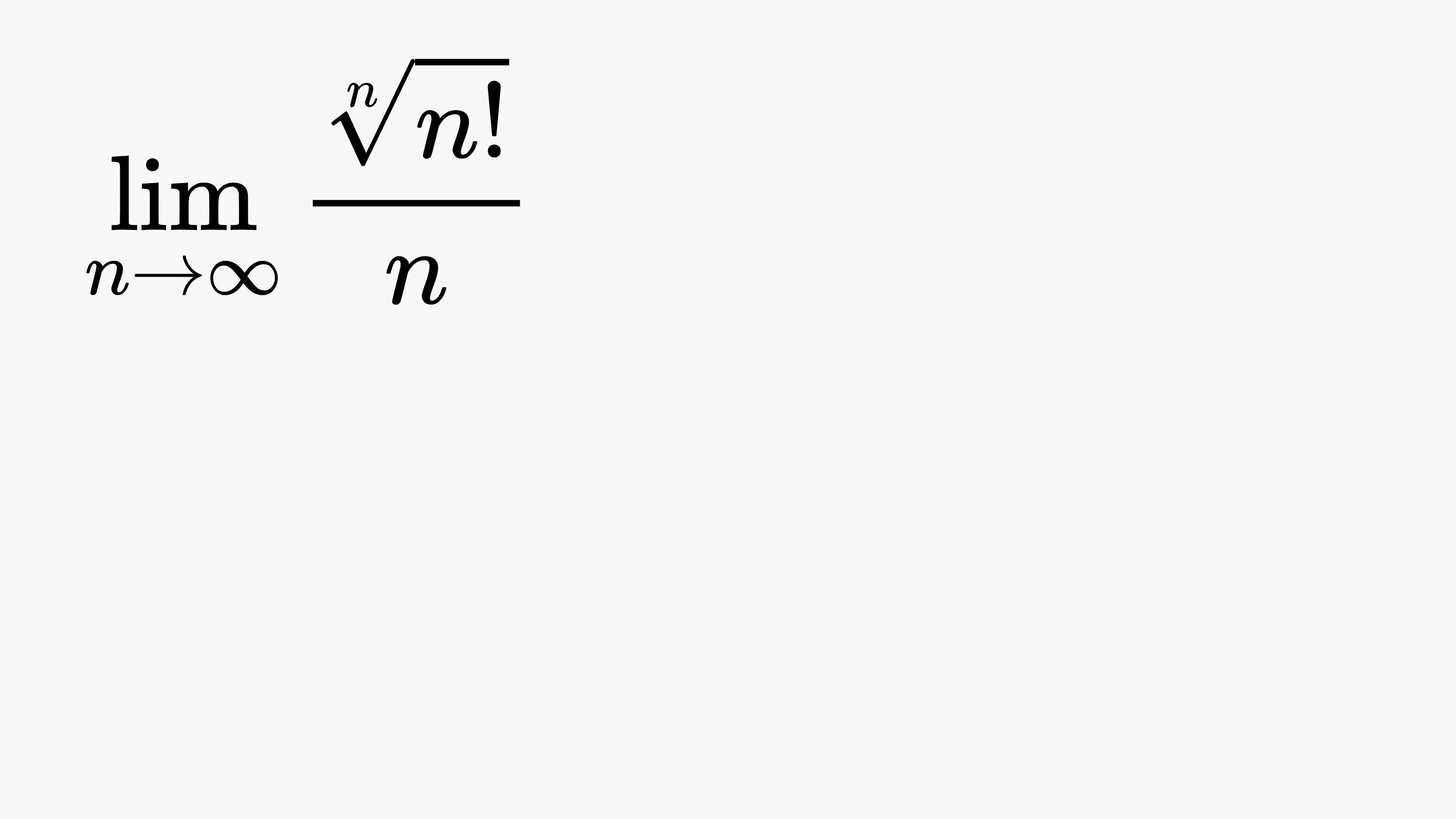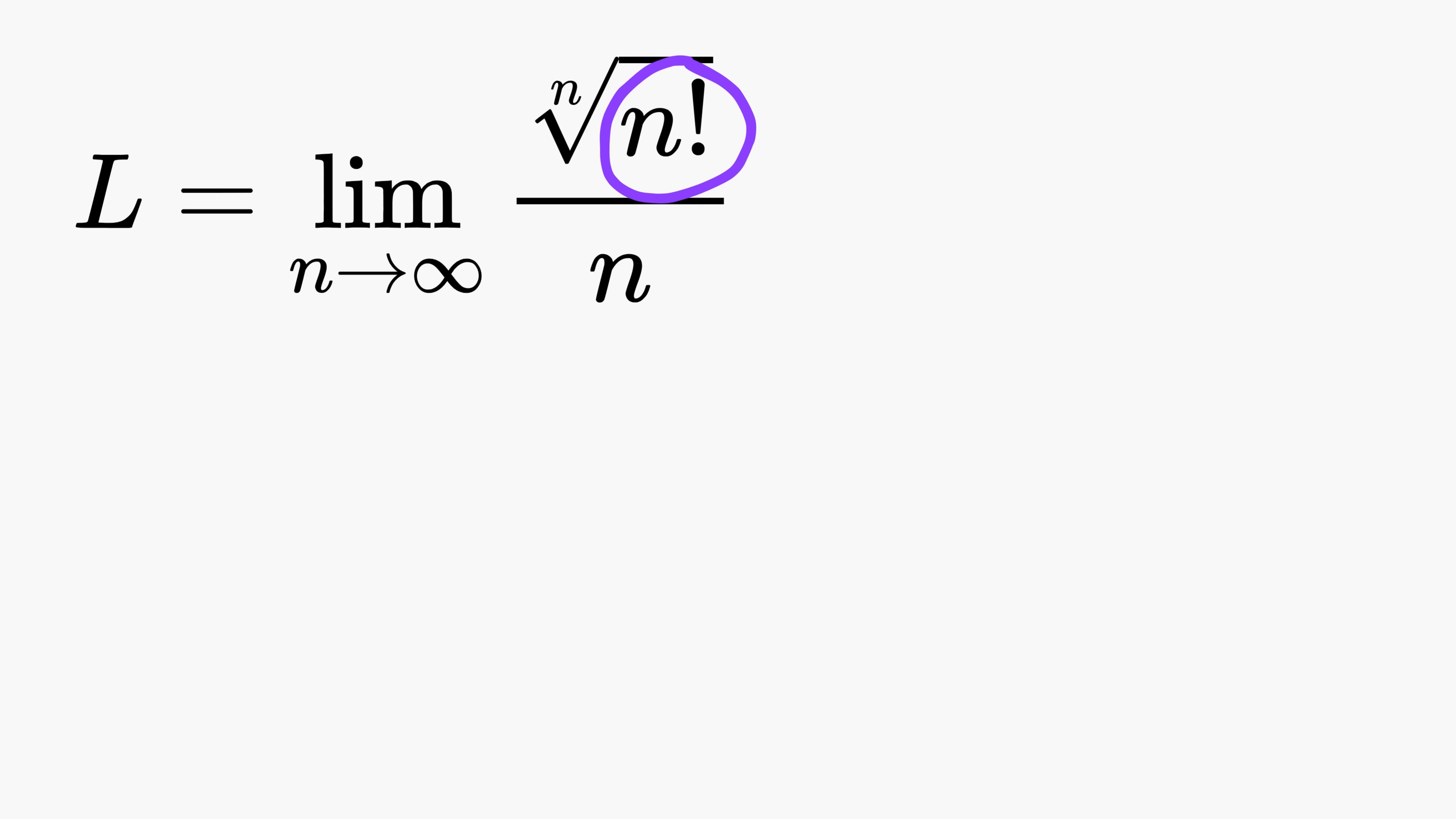To keep things simple and organized, let us give this limit a name and call it L. The main trouble in this problem comes from three places: the factorial, the nth root, and the presence of n in the denominator.